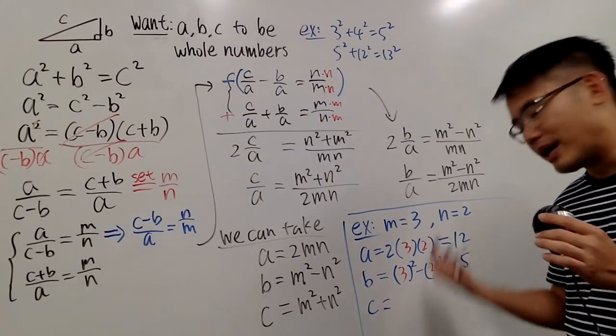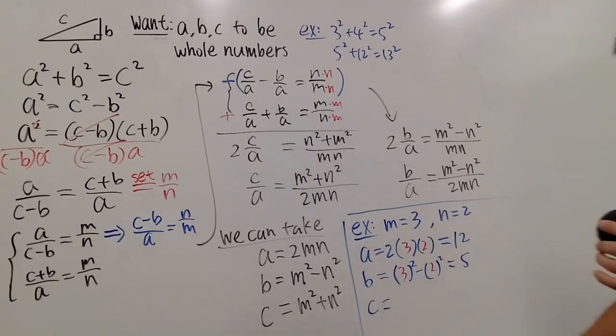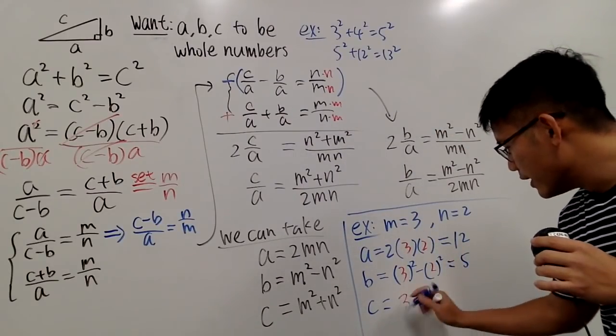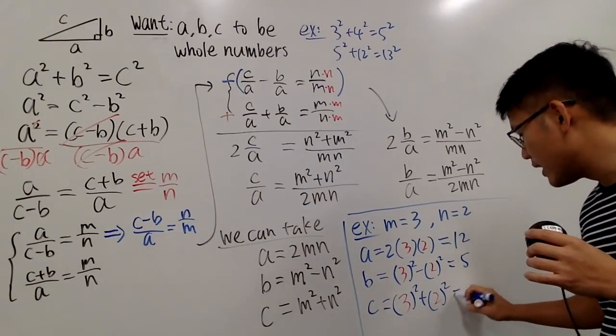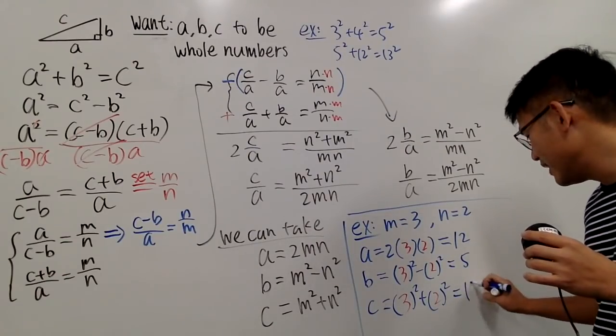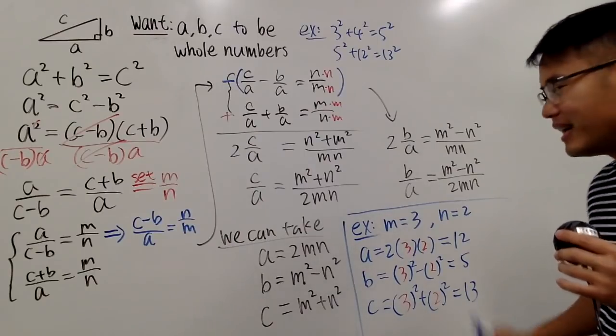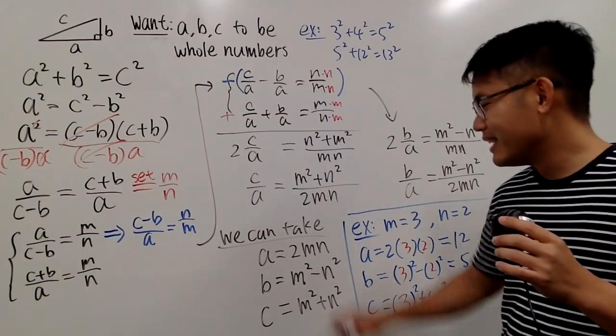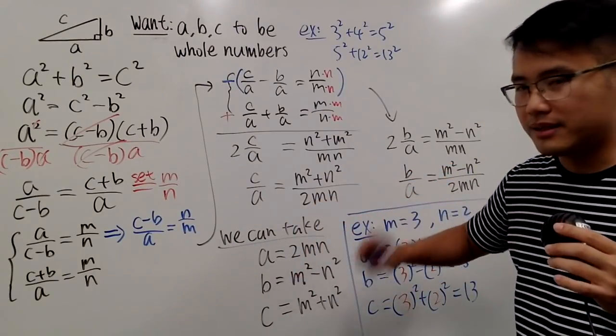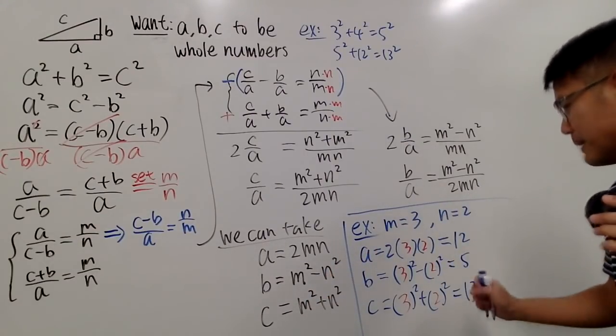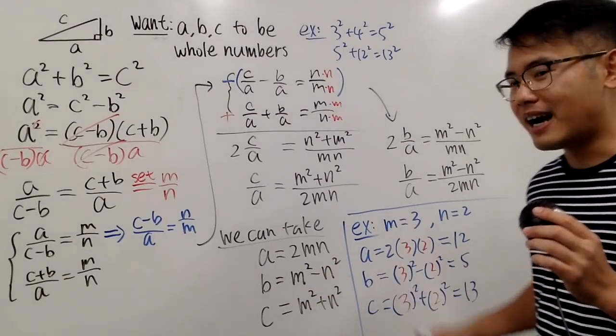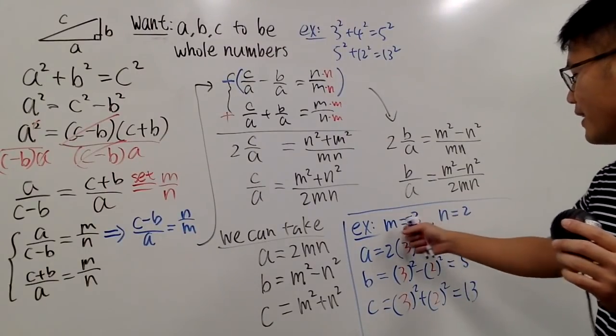Lastly, C, you guys know it should be 13 because that's one of the examples from earlier. But anyway, I'll work this out for you guys. 3 squared plus 2 squared. This right here is equal to 13. Because I told you, this squared plus that squared equals this squared, right? So, this is the Pythagorean triple that I got based on the choice of M and N right here.